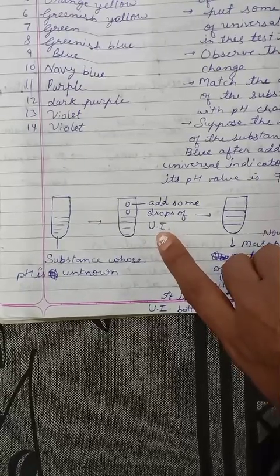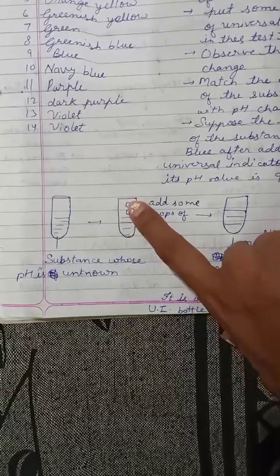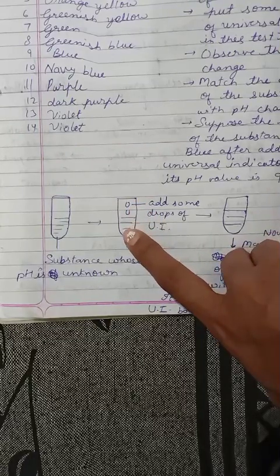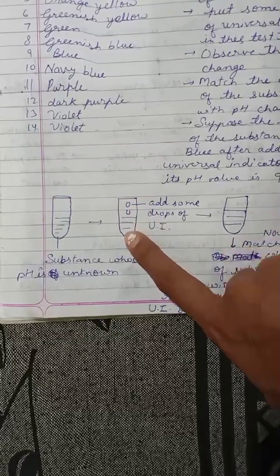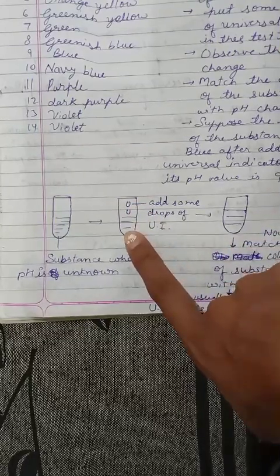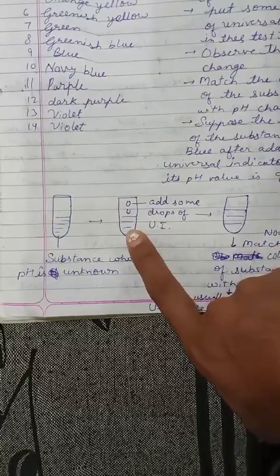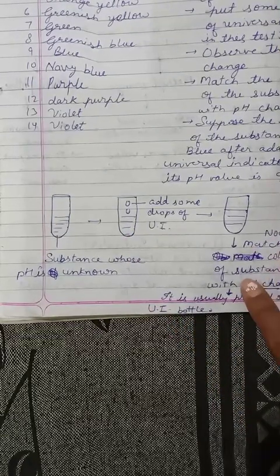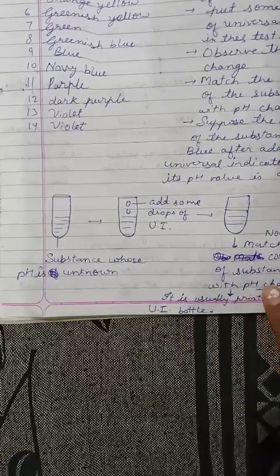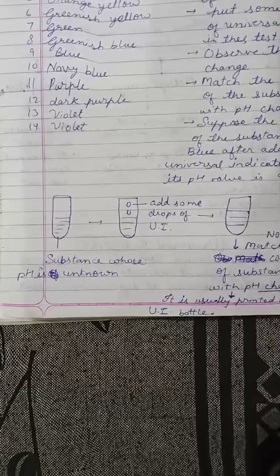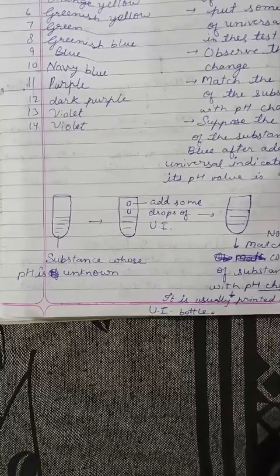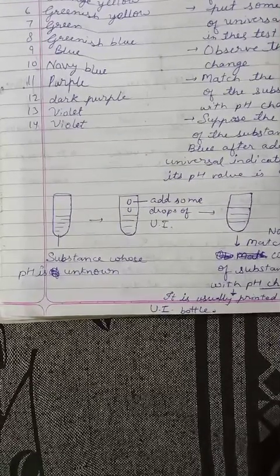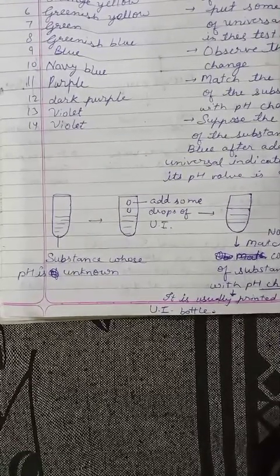Now we will add some drops of universal indicator — UI means universal indicator drops. We will observe the color change of the solution. Then we match the color of the substance with the pH chart to find the pH.